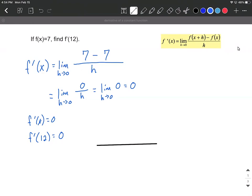So the original function would be a horizontal line going across at 7. Any tangent lines to that are also going to have the slope of 0.